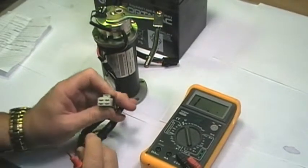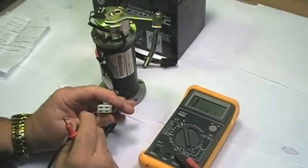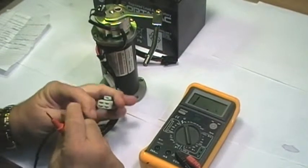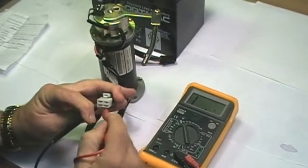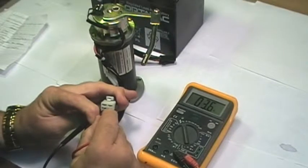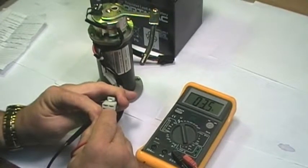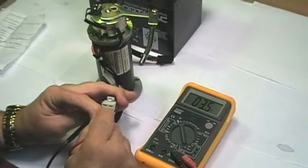So first we're going to check the armature of the motor by touching the lead into the connector and the other lead into the connector. And we have 3.6 ohms, which shows us that the armature is right on.